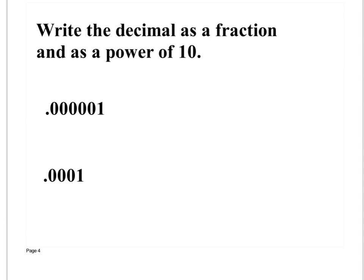The question says write the decimal as a fraction and as a power of 10. Let's write it as a fraction first. We write the number over something with a power of 10. In this case, 1 goes on top. I figure out what needs to go on bottom by counting the decimal places: tenth, 100, 1,000, 10,000, 100,000, so this would be the millionth decimal place. So I write 1 over a million.